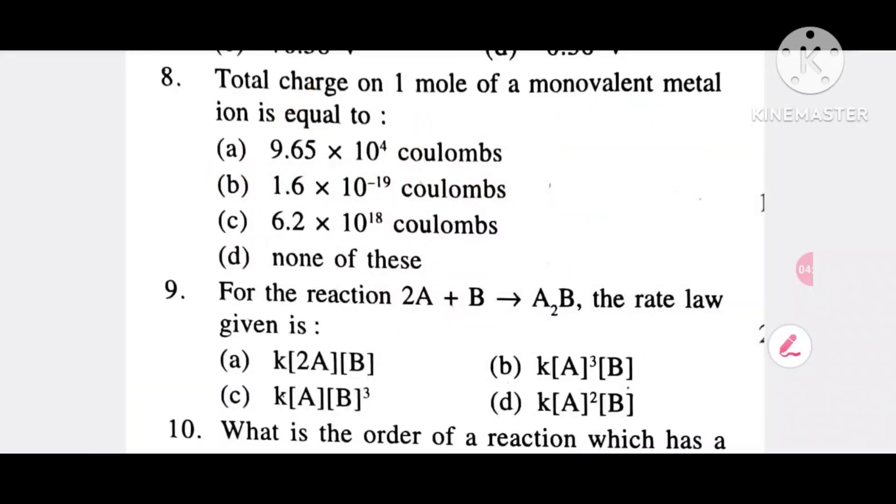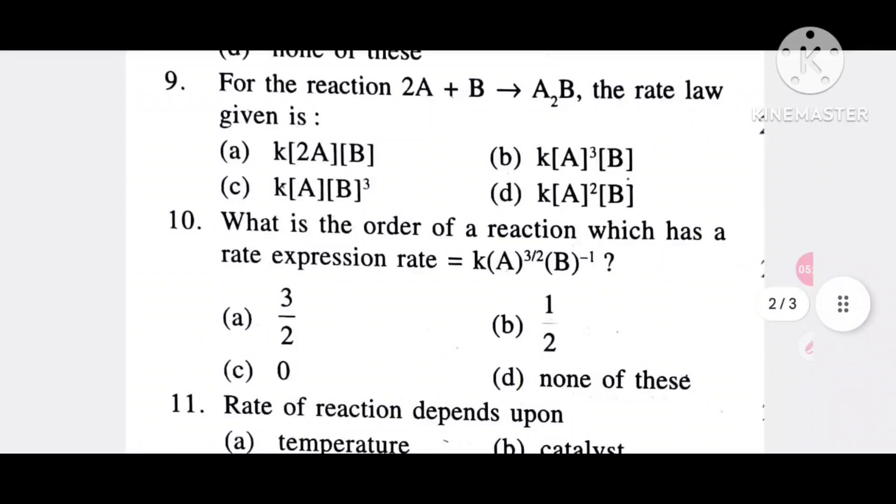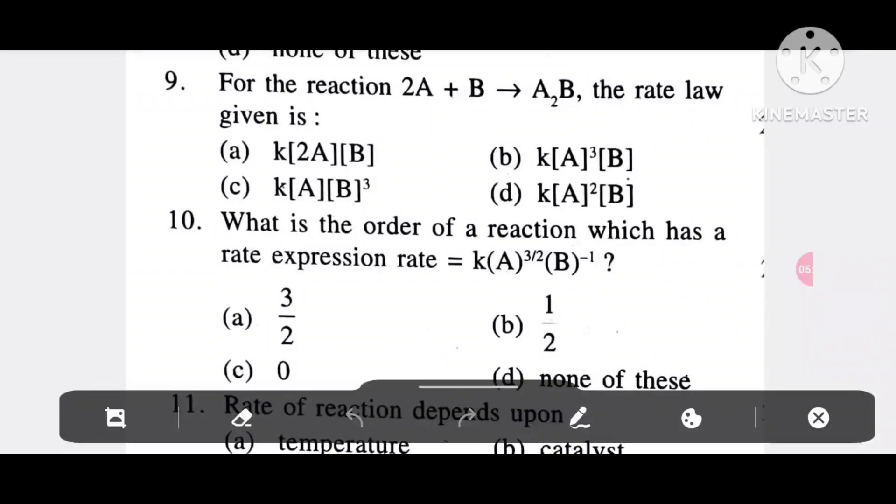Question 9: For the reaction 2A + B → A2B, the rate law given is: option A, k[A]2[B]; option B, k[A]3[B]; option C, k[A][B]3; option D, k[A]2[B]. It is option D.